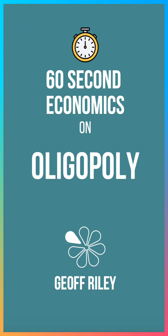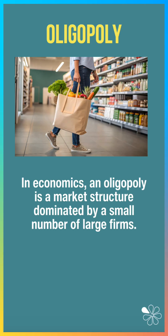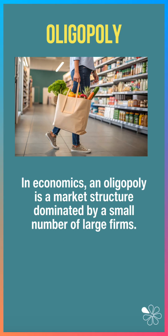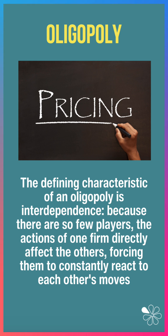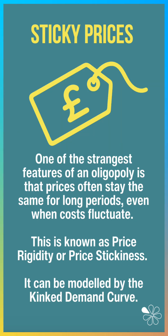60 second economics on oligopoly. This is a market structure dominated by a small number of large firms. The key defining characteristic is interdependence — the actions of one business directly affects the others, forcing them to constantly react to each other's moves.